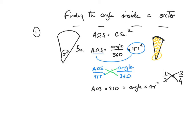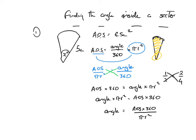I'll now switch these over. The angle times pi r squared is equal to the area of the sector times 360. So the angle is equal to the area of the sector times 360 divided by pi r squared.